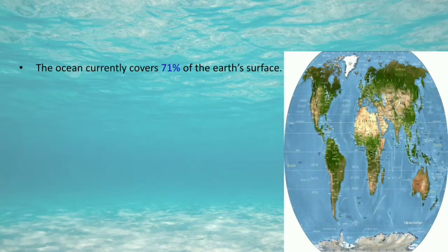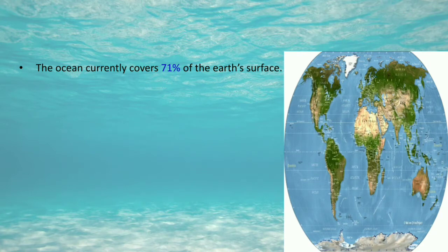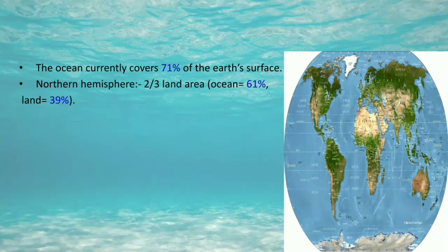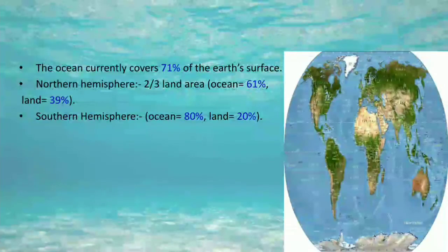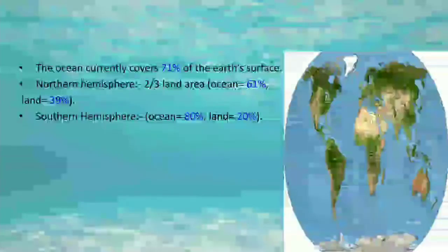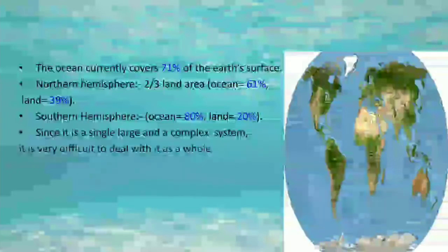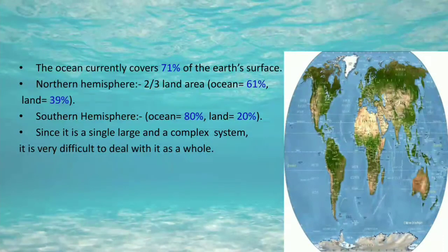The ocean currently covers approximately 71 percent of the Earth's surface. In the map we can see that most of the ocean covers the southern hemisphere and most of the land is in the northern hemisphere. In the northern hemisphere, land area covers 39 percent and ocean covers 61 percent, whereas in the southern hemisphere ocean covers 80 percent and land covers only 20 percent. So most of the oceans are found in the southern hemisphere.